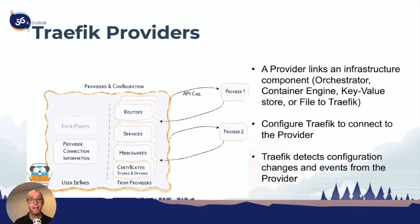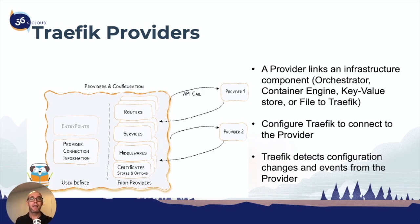A provider actually links your Traefik deployment to an infrastructure component — for example an orchestrator, a container engine, a key value store, or just a flat file. Traefik, once connected to a provider like Docker, knows exactly what to look for and detects configuration changes or any events from Docker automatically. For example, when a new container starts, it informs Traefik directly, and Traefik registers the container and pulls all the configuration automatically, detecting routers and different things through the provider.